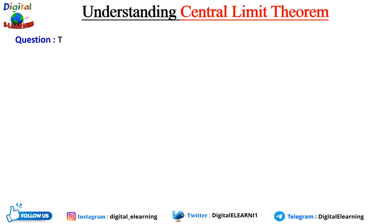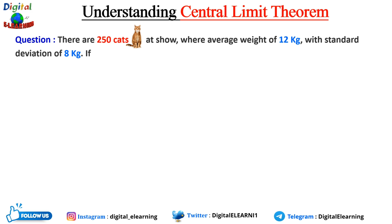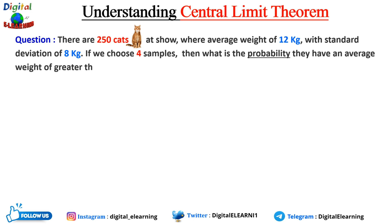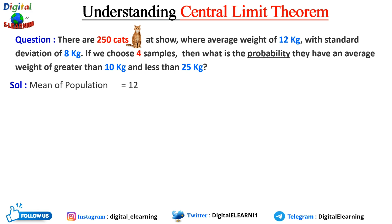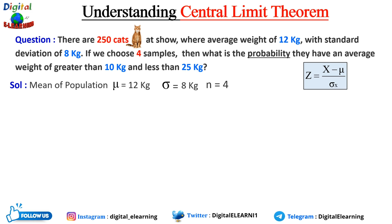Let's take an example to understand this concept. There are 250 cats at a show where the average weight is 12 kg with a standard deviation of 8 kg. If we choose four samples, what is the probability that the average weight of a cat is greater than 10 kg and less than 25 kg? The population mean mu is 12 kg, the standard deviation is 8 kg, and n equals 4.